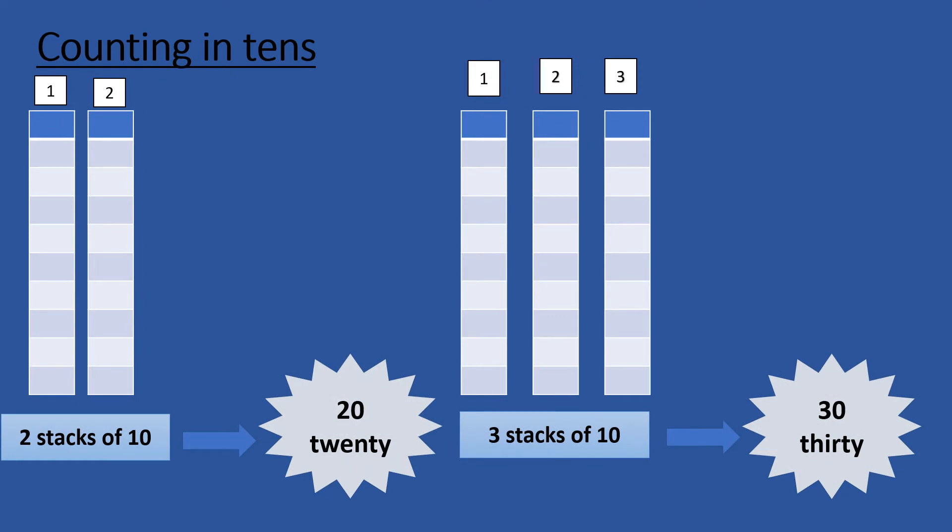If we have 2 stacks of 10, then 2 stacks of 10 make 20. Revise it with me — in numbers it is called T-W-E-N-T-Y, 20. In the same manner, if we add one more stack of 10 to 20, we will have 3 stacks of 10, and 3 stacks of 10 make 30, called T-H-I-R-T-Y, 30.